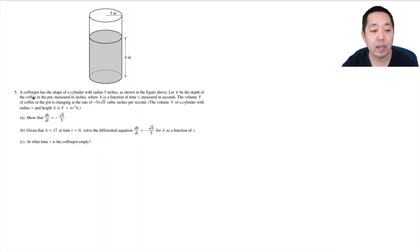We have a coffee pot with the shape of a cylinder with radius 5 inches shown in the figure above. Let h be the depth of the coffee pot, measured in inches, where h is a function of time measured in seconds. The volume of the coffee pot is changing at a rate of negative 5π√h cubic inches per second. They give you the volume equation. Show that dh/dt is equal to that.